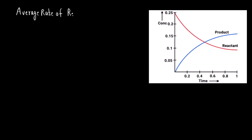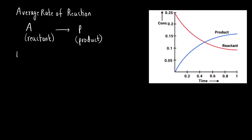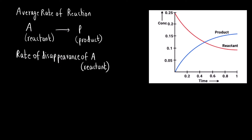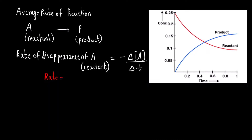Average rate of the reaction. Let us consider a general reaction where reactant A is getting converted to product P. Suppose we want to find out the average rate of disappearance of A, that is the reactant. In general we write: minus change in concentration of the reactant divided by change in time. Now, why have we added this negative sign? Because the value of rate cannot be negative — it should be positive.